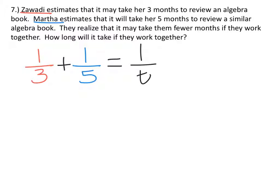We want to multiply everything by the least common denominator, which in this case is 15T.